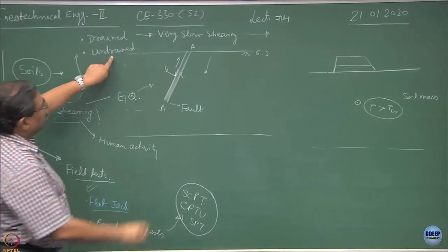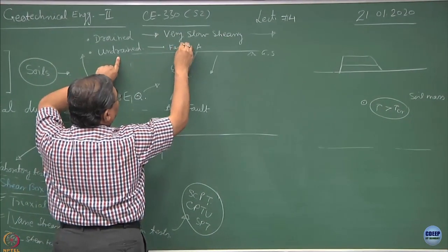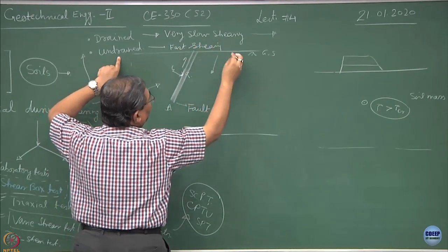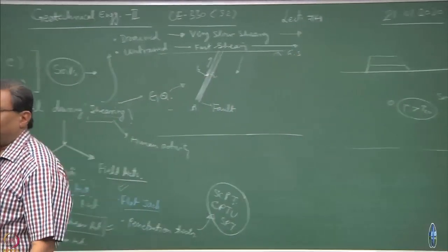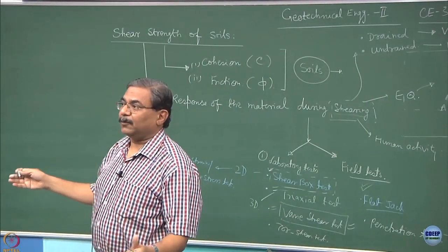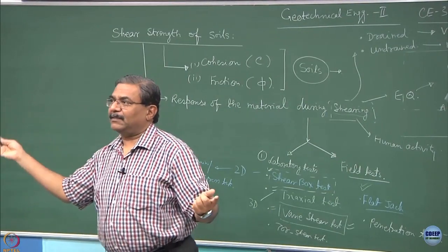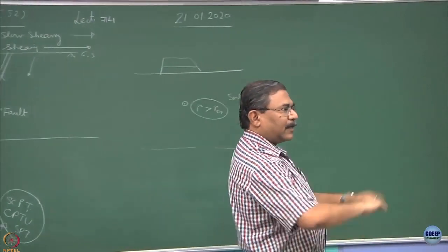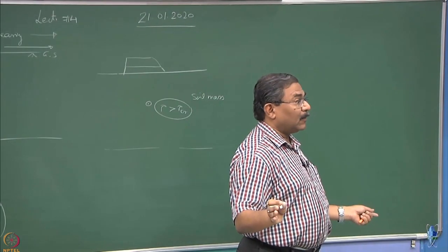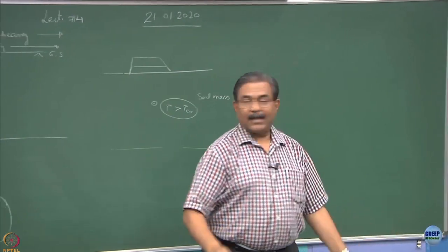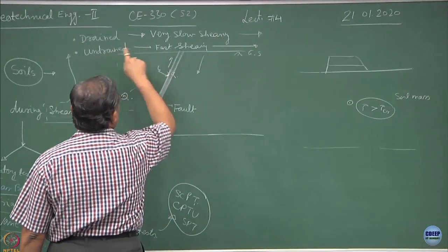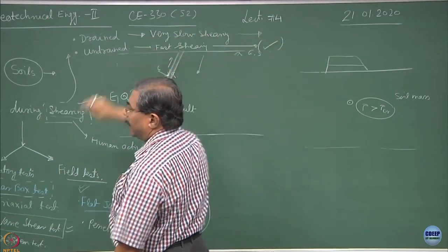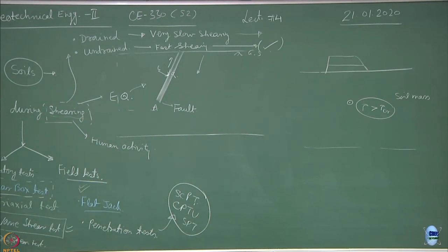Opposite to this, when I am doing undrained, fast shearing. Why? You are not giving any time to the material to realize what is happening. Earthquake: within two seconds everything happens. So you want to understand the response of the material when the loading is so fast, it cannot realize what is happening. That means the pore pressure cannot get dissipated. So this becomes another extreme where we say undrained testing, fast shearing, and what I am going to get is the undrained parameters.